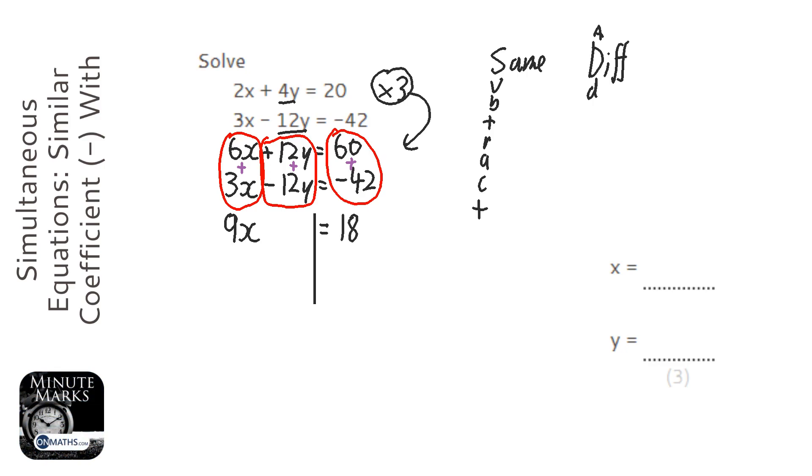So let's put our lines in. And we're going to divide both sides by 9. And we've got x equals 2. So that's half done, because we need to feed that back into one of the equations to work out what y is.